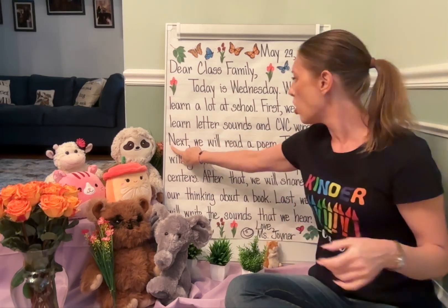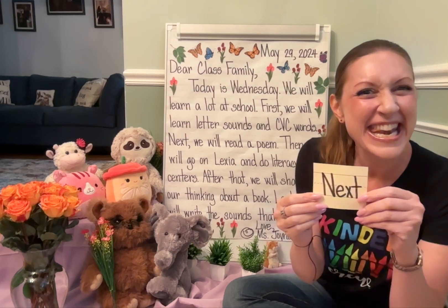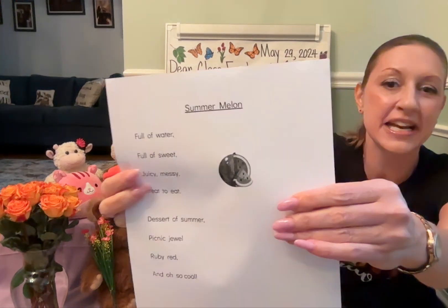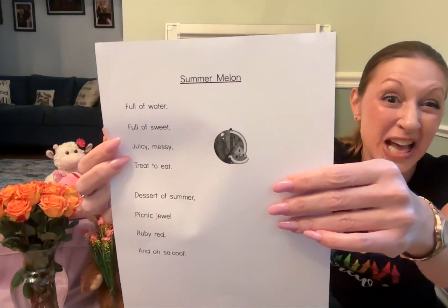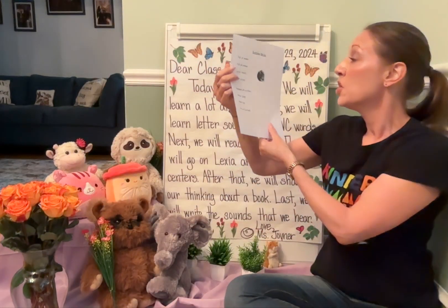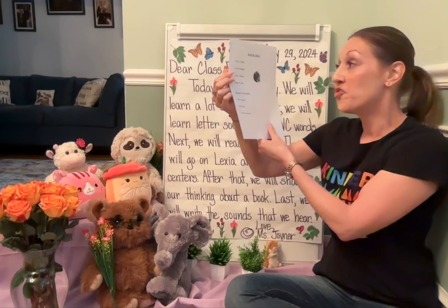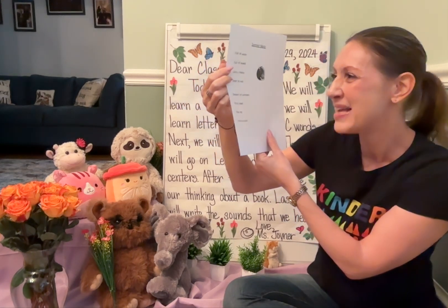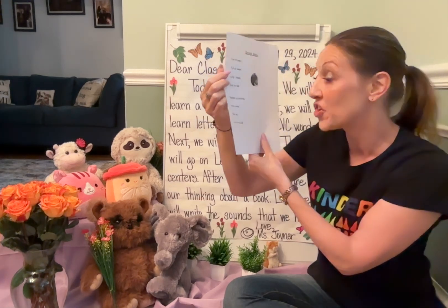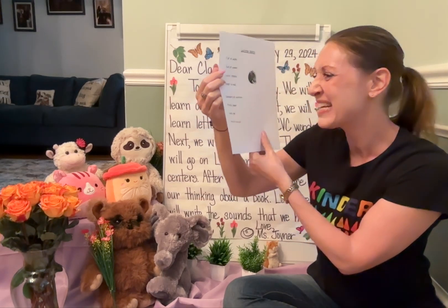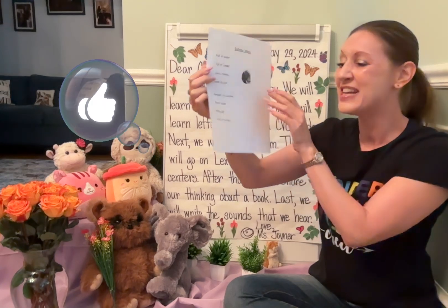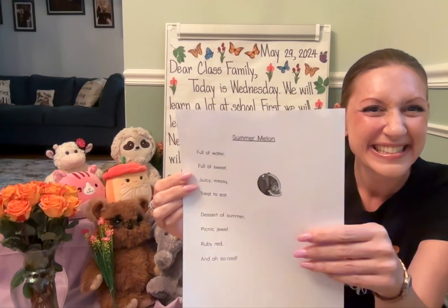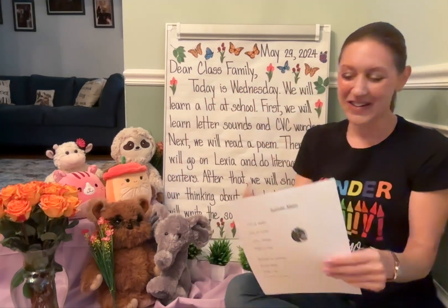Check out this transitional word — starts with an N: next. Next, we will read a poem. We're going to be rereading the poem "Summer Melon." Summer melon, summer melon, full of water, full of sweet juicy messy treat to eat — dessert of summer, picnic jewel, ruby red and oh so cool.